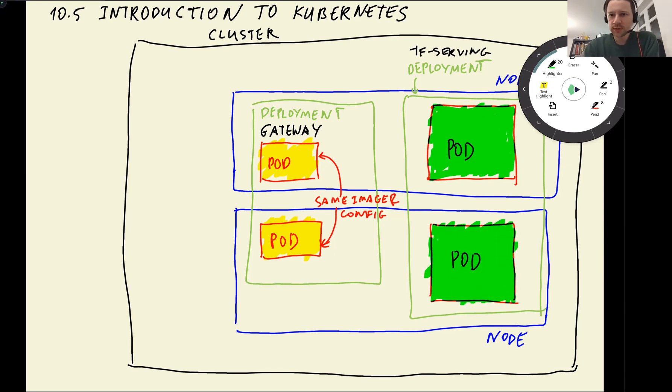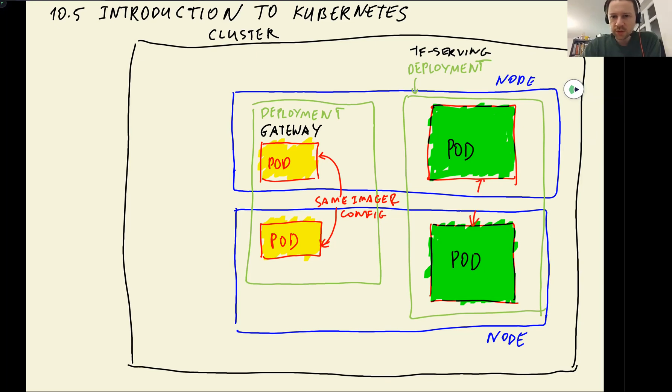And again, the pods in this deployment, they have the same image and same config. So in our case, I think it was zoom camp 10 model, exceptionally for 001, something like this. So let me write it down.